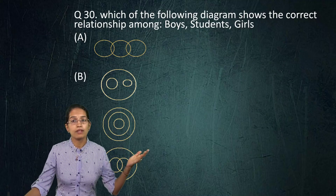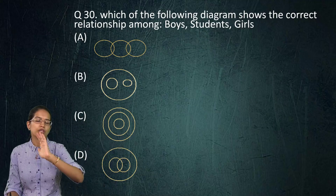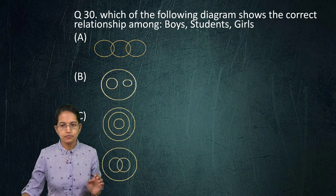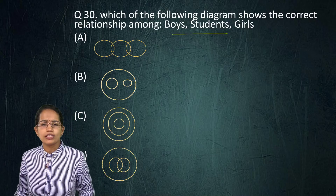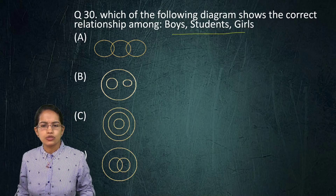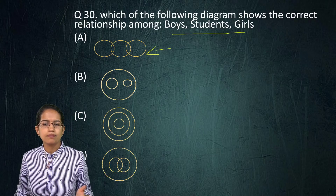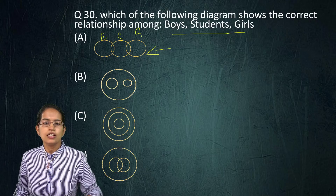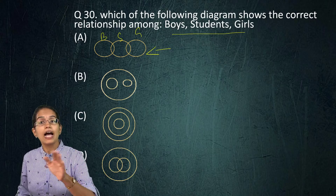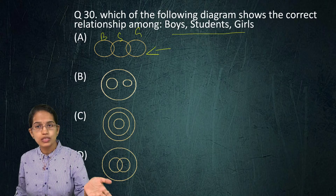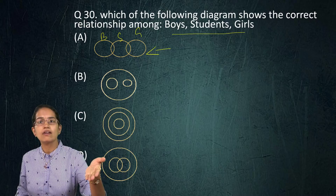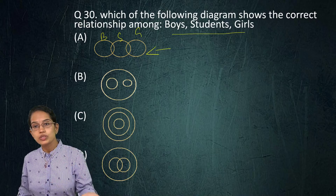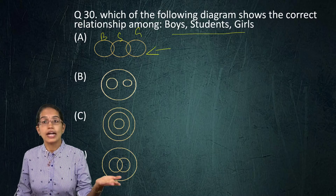The next question involves boys, students, and girls in a Venn diagram. Boys can be outside the students circle, students can include both boys and girls but also adults. The best matching combination is found only in choice A.